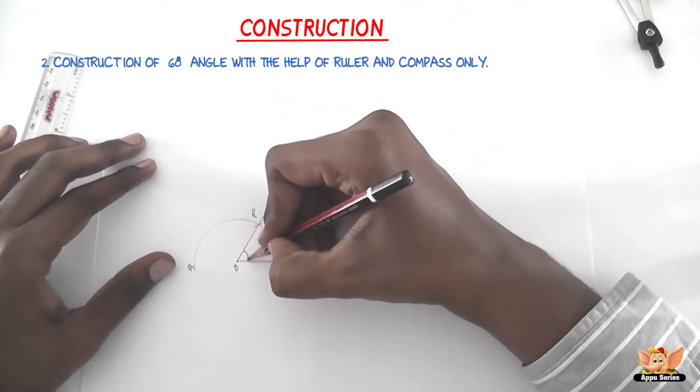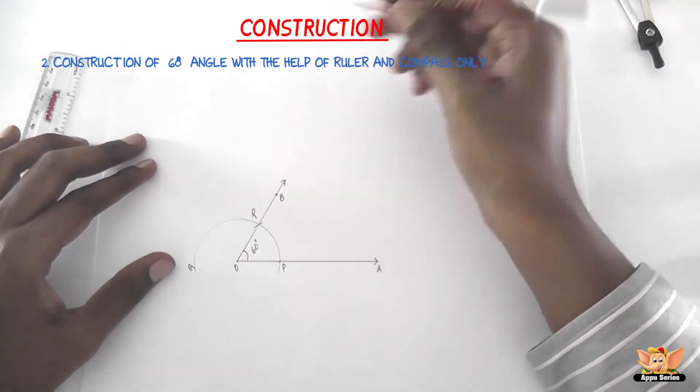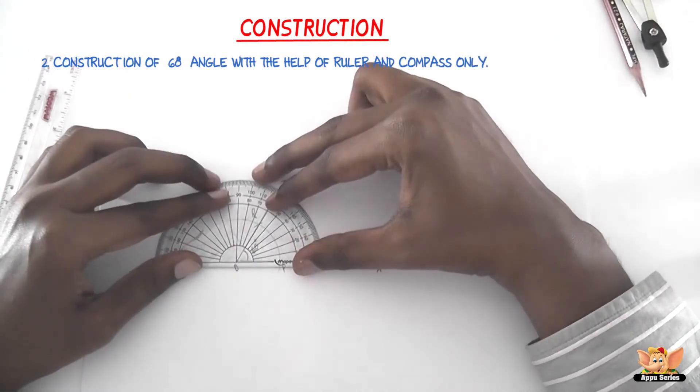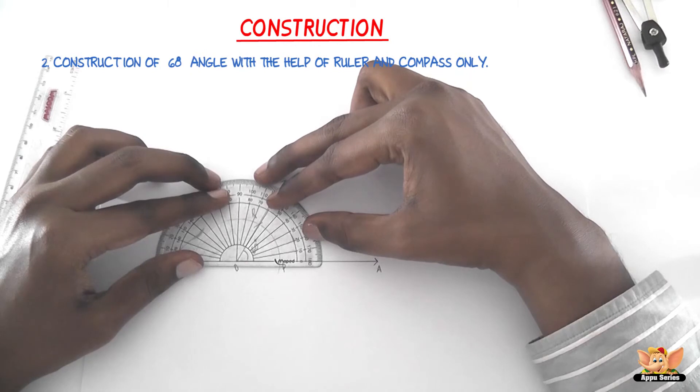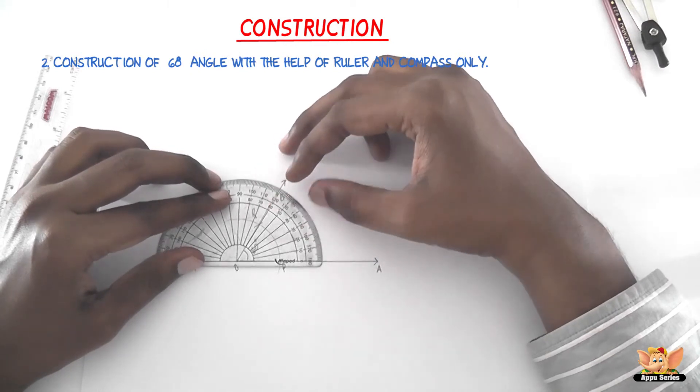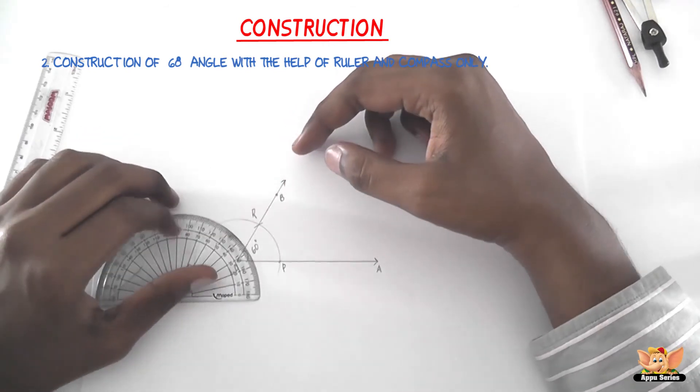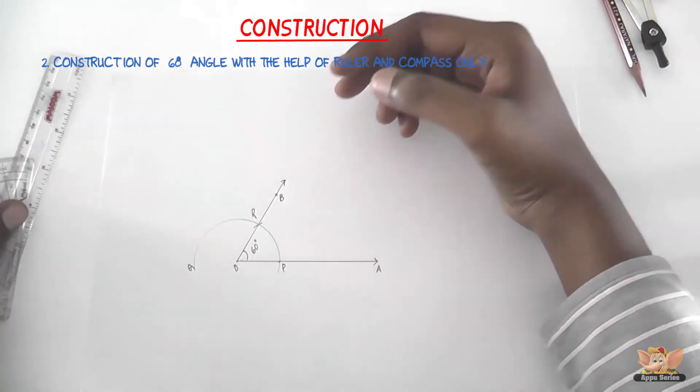Now to cross check it, let us use the protractor and measure the same. So here it is, a measure of 60 degrees. Thank you.